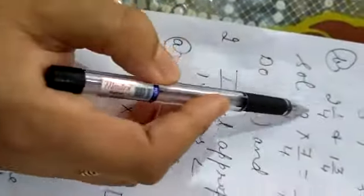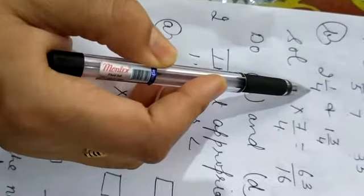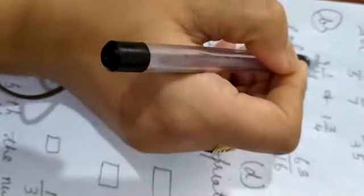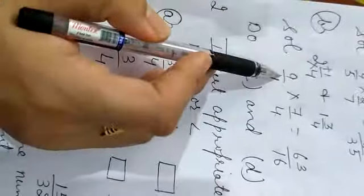Part B. This is a mixed fraction. Firstly we will convert the mixed fraction. 2 multiply with 4 will be 8, and 8 plus 1 will be 9.